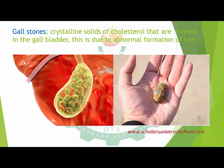Another liver disease is gallstones — crystallized solids of cholesterol that are formed in the gallbladder due to abnormal formation of bile. When the liver forms bile and it is stored in the gallbladder, if the bile is not formed correctly — perhaps due to high production of bilirubin — it can form crystalline solids that block the bile ducts. These crystallized solids are called gallstones and can block the passage of fluid.